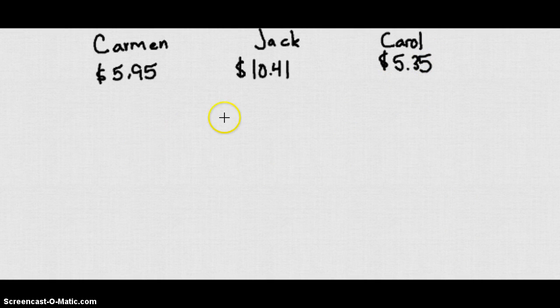So then, Carmen, we know, has bought two burgers, one order of fries, and two sodas. So we're going to call burgers B, fries F, sodas S.